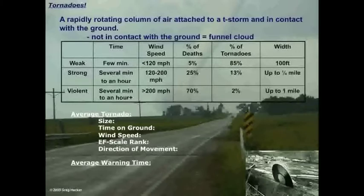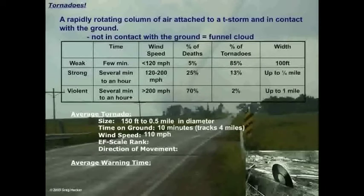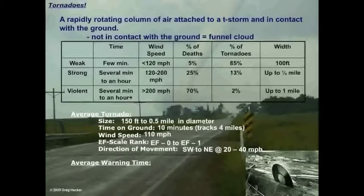Tornadoes have also been found at very high altitudes — for example, in Sequoia National Park on July 7, 2004, a tornado was reported along the side of a mountain at 12,000 feet in elevation. On average, the diameter of a tornado's track is somewhere between 150 feet and a half mile wide. The average tornado spins on the ground for about 10 minutes, tracking about 4 miles, with wind speeds around 110 miles an hour — an EF0 to EF1. Most tornadoes move from southwest to northeast at about 30 miles an hour.